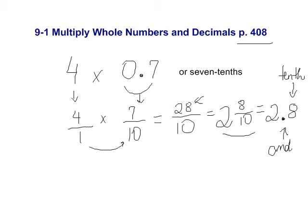You may be asking yourself, is there an easier, quicker way to find the product? And the answer is yes. Let's give that a try. 0.7 and you're going to multiply that by 4. There are two steps when multiplying a whole number with a decimal number. The very first step is to multiply regularly. 4 times 7 is 28.